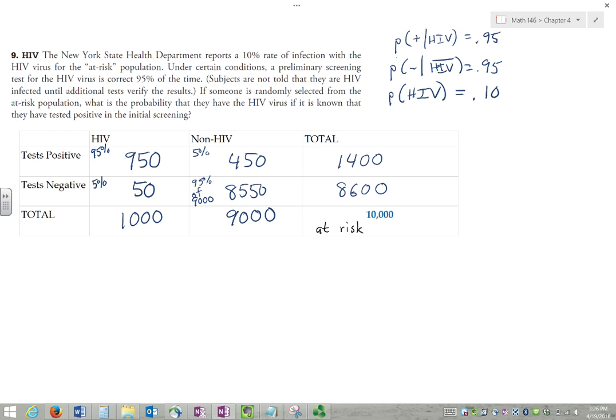So what are we trying to find? We're trying to find the probability that the person has HIV if it's known they have tested positive. Okay, so probability HIV given a positive result.